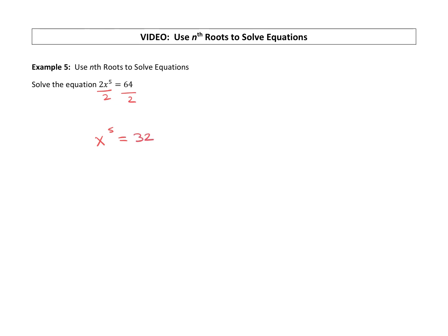Now, to cancel something raised to the fifth power, you can raise it to the one-fifth power. Because x to the 5 raised to the one-fifth power is x to the 5 over 5, which leaves us with just x. We can raise 32 to the one-fifth power, and we want to recognize that's the same thing as the fifth root of 32. The fifth root of 32, or 32 raised to the one-fifth power, is 2. So we get x equals 2.